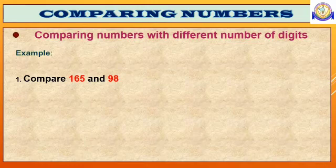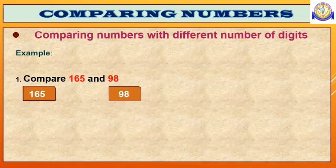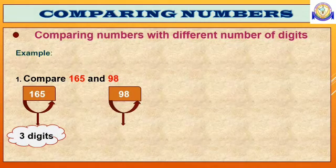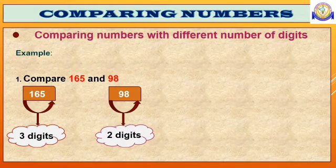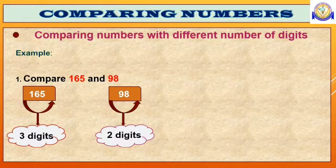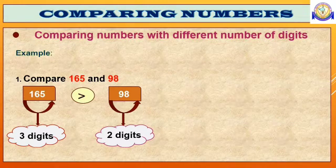First step, what you should do is count the number of digits. 165 has 3 digits. 98 has 2 digits. 3 digits more or 2 digits more? Yes, 3 digits are more. So, 165 is greater than 98.